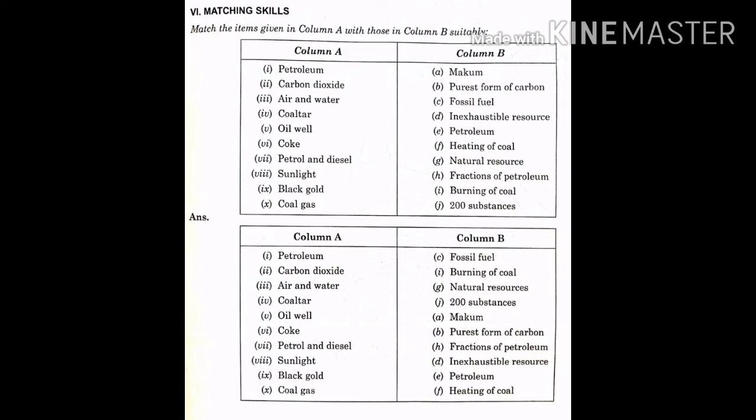Match the items given in column A with those in column B suitably. In column A: first one petroleum, second carbon dioxide, third air and water, fourth one coal tar, fifth one oil well, sixth coke, seventh petrol and diesel, eighth sunlight, nine black coal, ten coal gas.